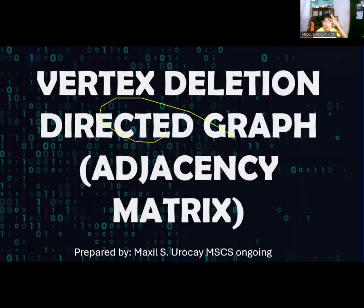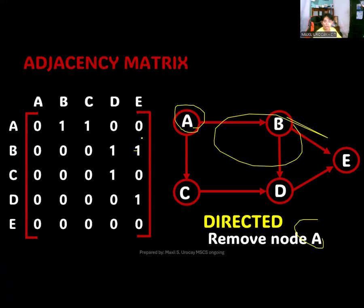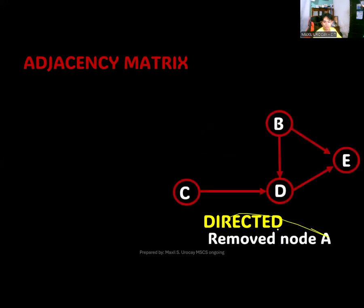Let's figure out for the directed graph the same thing. Suppose that in your directed graph, you wanted to remove node A. This is your node A. For your adjacency matrix, you will automatically do the same thing. You will remove the row and column.